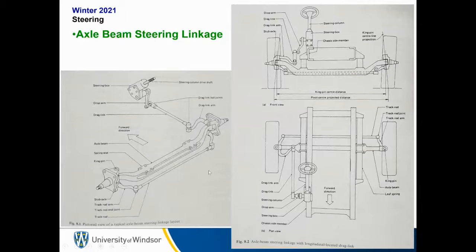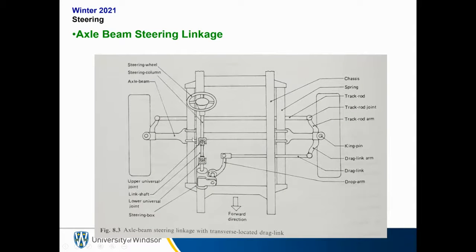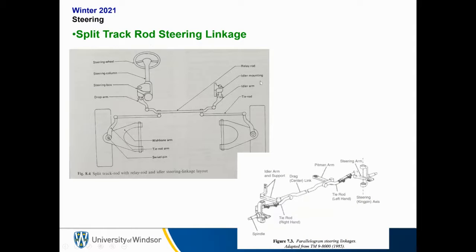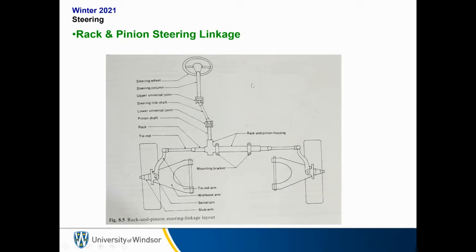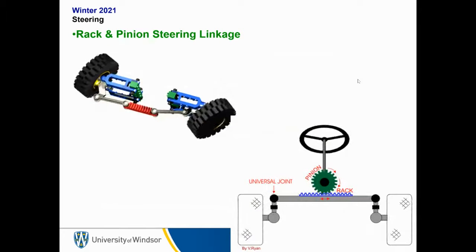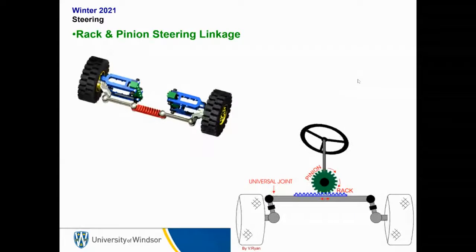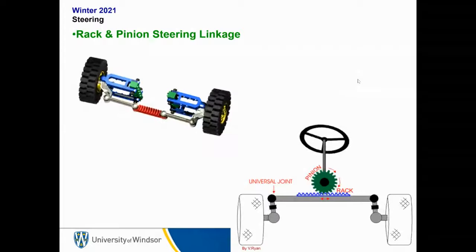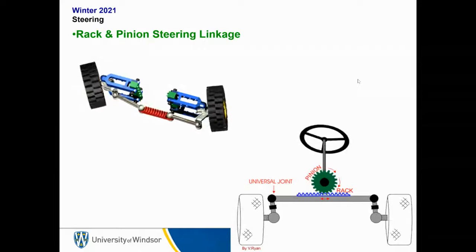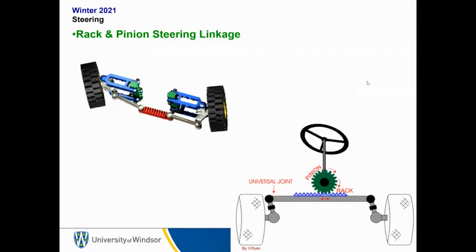Let's look through the three types of steering systems. There's the axle beam steering linkage, the split track rod steering linkage, and then the rack and pinion. The rack and pinion is by far the choice for automotive engineering design — almost 99.9% of all vehicles, including those in heavy-duty diesel situations, use a rack and pinion steering linkage. It's a fairly robust system that works very well. Those other two versions are generally not used much in automotive engineering at all.